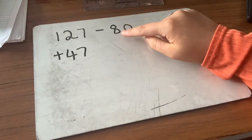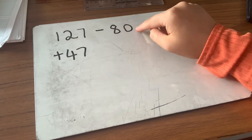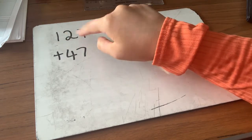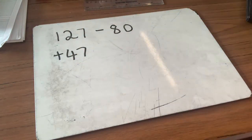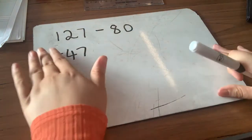Another way to think about it is to count up to 100, so I know that would be 20. And then from 100 to 127 would be 27, so 20 plus 27 would be 47. That's another way to think about it as well.